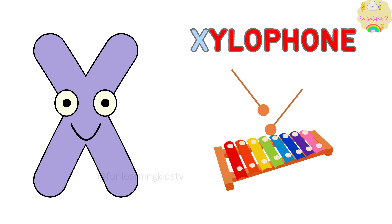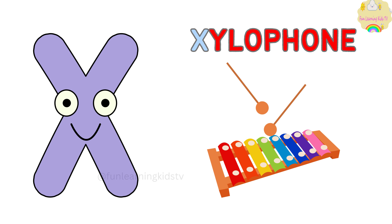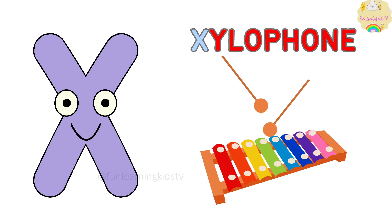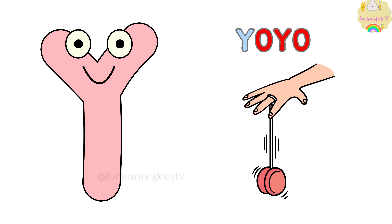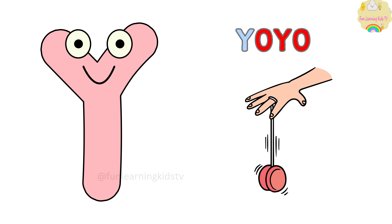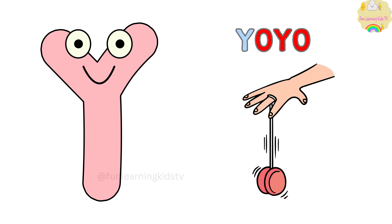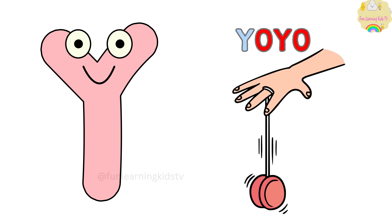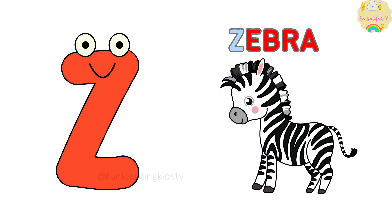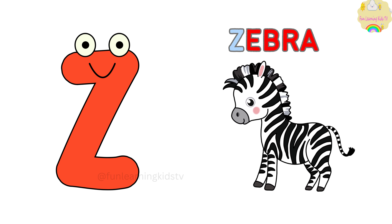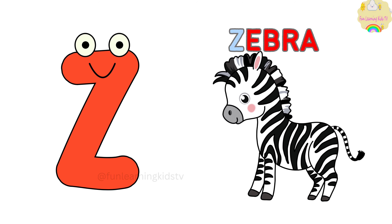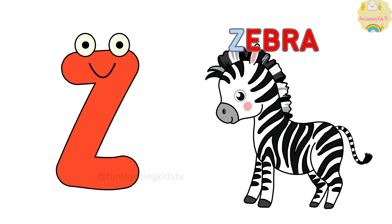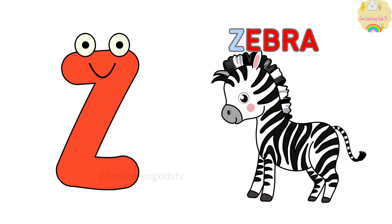X is for Xylophone. X-X-Xylophone, X-X-Xylophone, X-Xylophone. Y is for Yo-yo. Y-Y-Yo-yo, Y-Y-Yo-yo, Y-Yo-yo. Z is for Zebra. Z-Z-Zebra, Z-Z-Zebra, Z-Zebra.